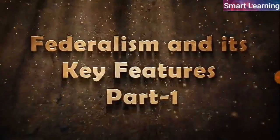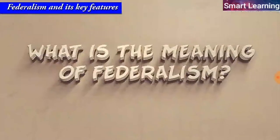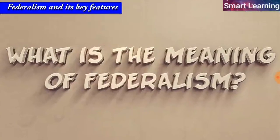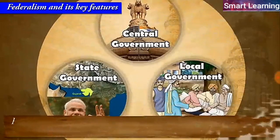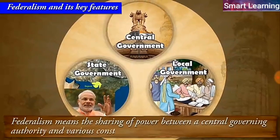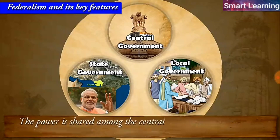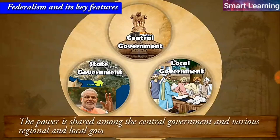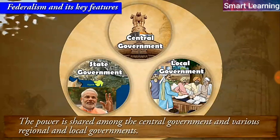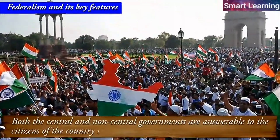Federalism and its key features. Federalism means the sharing of power between a central governing authority and various constituent units. The power is shared among the central government and various regional and local governments. Both the central and non-central governments are answerable to the citizens of the country who elect them.